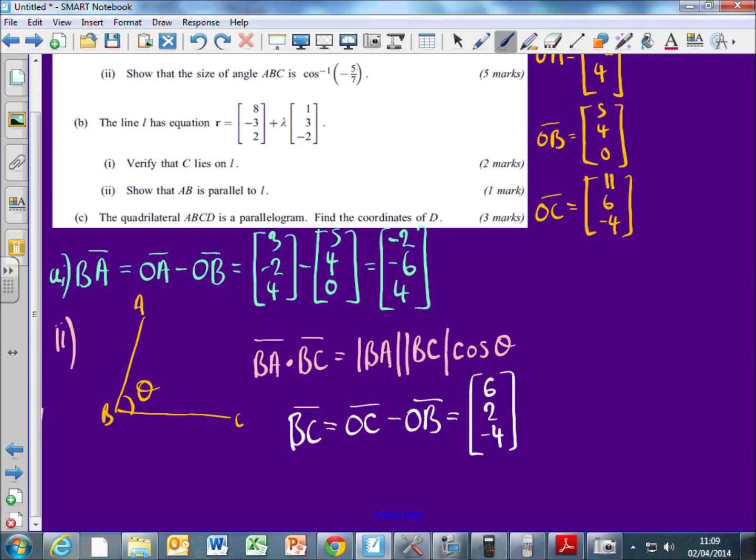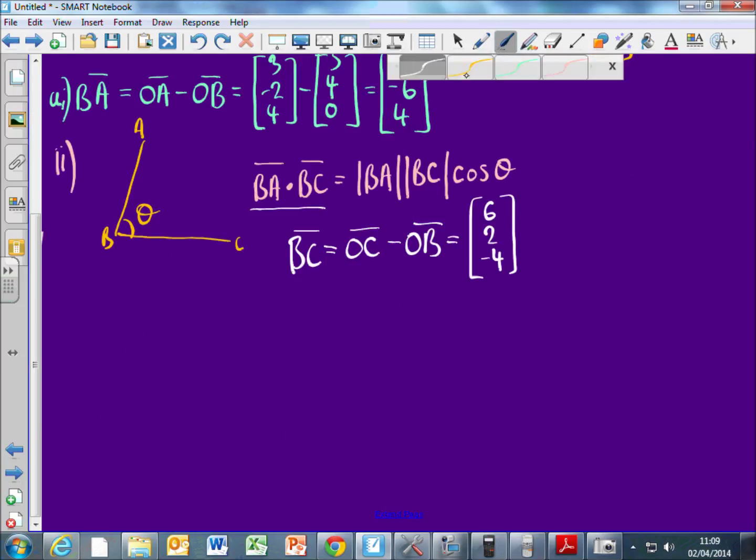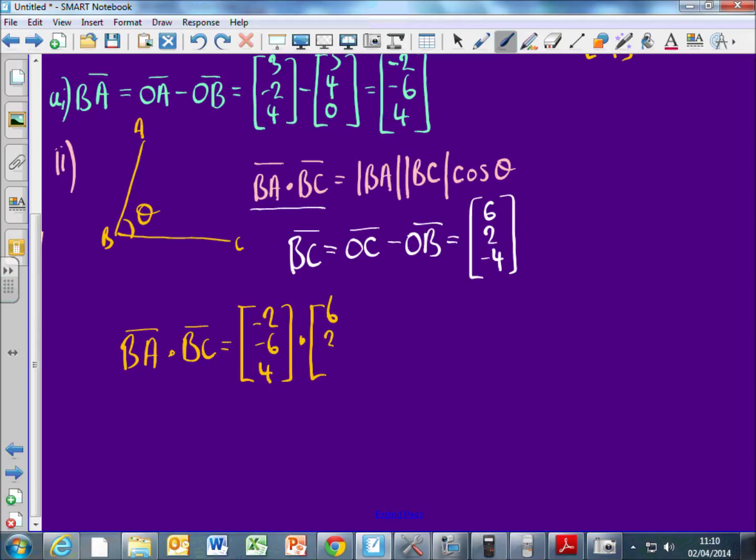So if I do the dot product of B, A dotted with B to C, I should get the magnitude of B, A, magnitude of B, C, cos theta. But there's also that other way I can work out the dot product, which is where you multiply the X components, multiply the Y components, and so on like that. So B to A dotted with B to C should be minus 2, minus 6, and 4 dotted with 6, 2, and minus 4. And if I dot those, I get 6 times minus 2, which is going to be minus 12. Minus 6 times 2, so that's minus another 12. And then I've got 4 times minus 4, minus 16. So all together, what's that, minus 40.